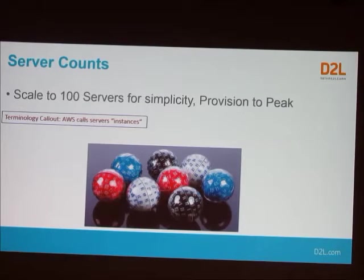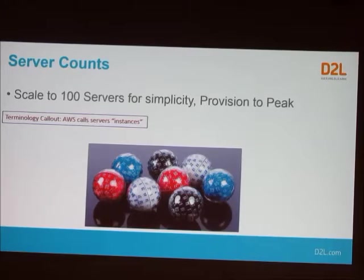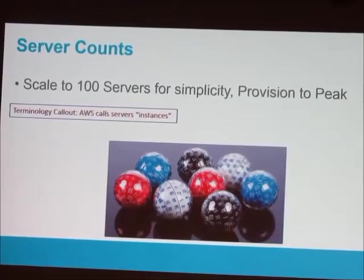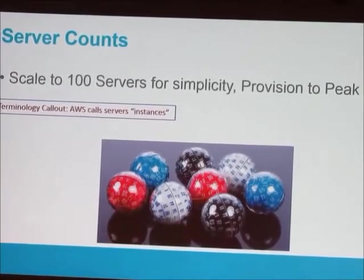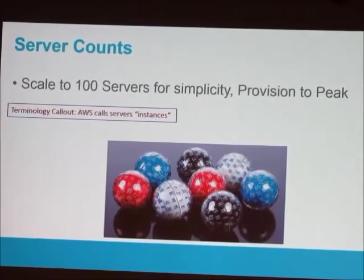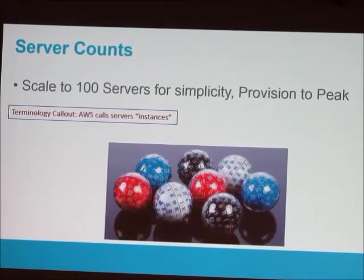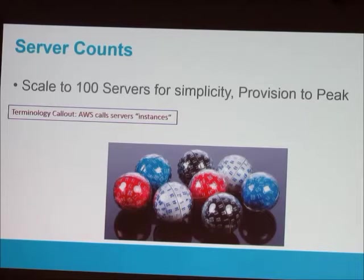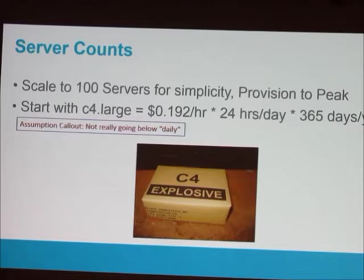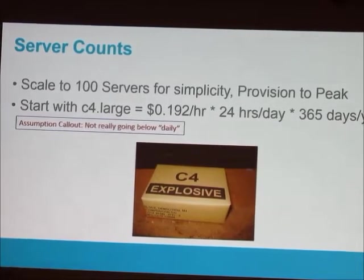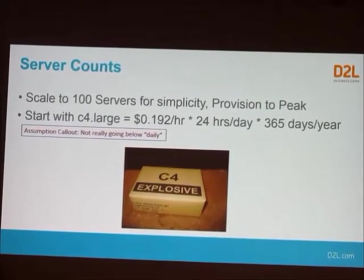We're going to pretend both use 100 servers on their worst day for simplicity, so we can multiply things by 100. We're going to provision to peak, meaning on our worst day, every day — that's the traditional hosted mindset where you're actually purchasing hardware and there's no savings to turning it off. Every day is like our worst day for costs. AWS calls servers 'instances,' so from now on I'll call them instances.